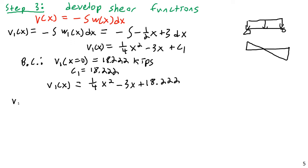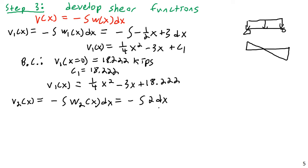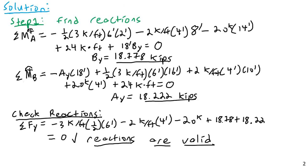Next, v2(x) = −∫w2(x) dx = −∫2 dx = −2x + c2. Now I need a boundary condition, but in zone 2 (from 6 to 10 feet) I don't have a reaction or beam end to immediately read off. There's no obvious value I can look at and say the shear is some known quantity.